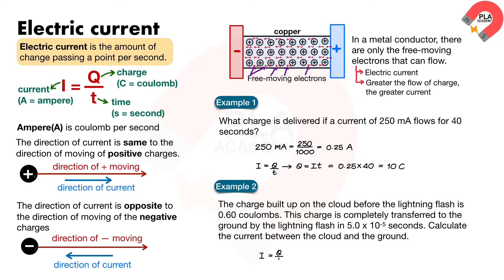From the equation I equals Q over T, substitute Q equals 0.60 and T equals 5.0 times 10 to the power of minus 5. I equals 12,000 amperes.